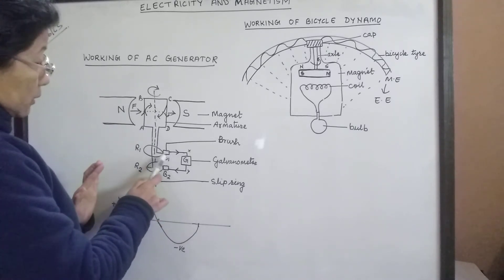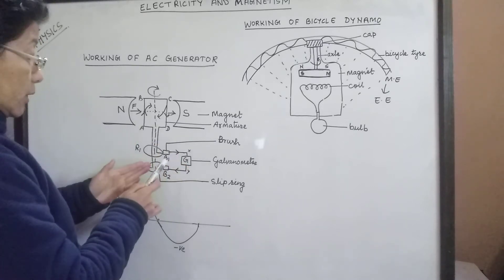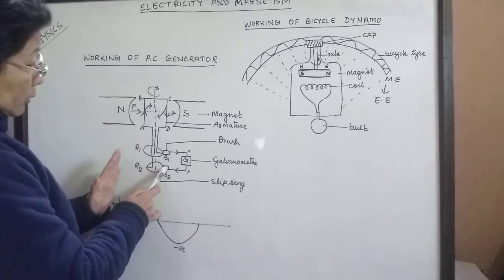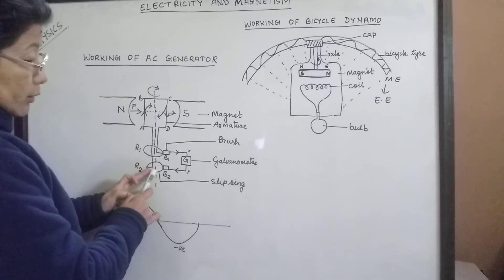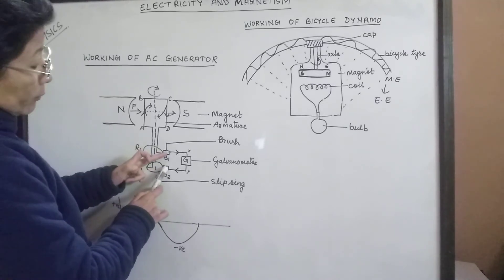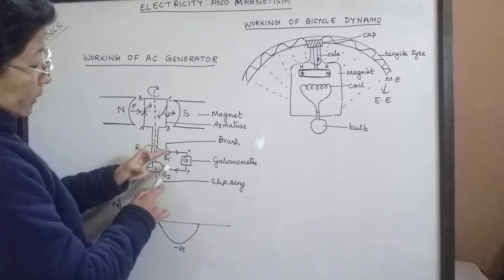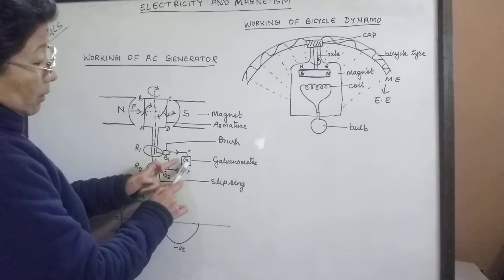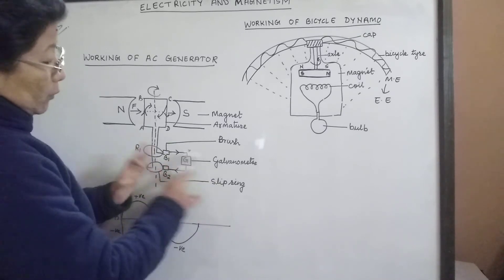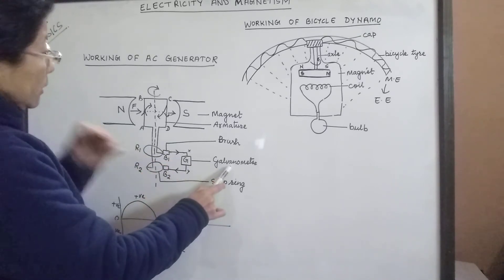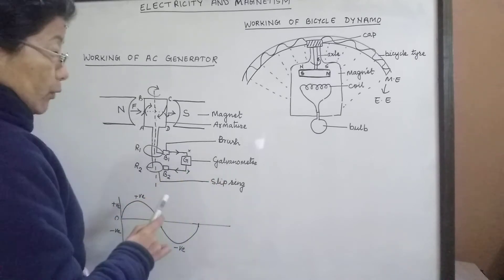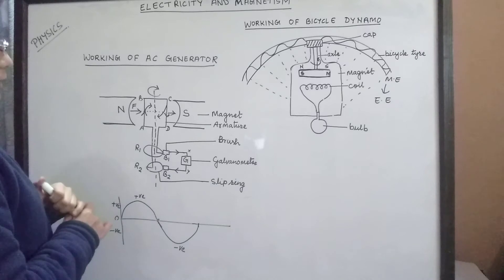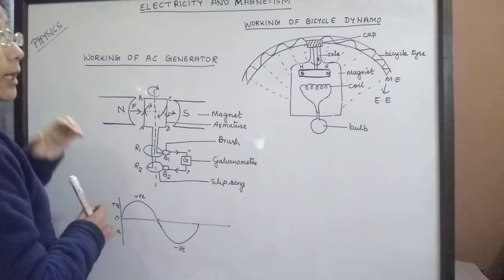There are also carbon brushes. These carbon brushes are conductors of electricity — they can conduct current. Brush 1 is for ring 1 and brush 2 is for ring 2. These carbon brushes collect the current and pass it into the circuit. The circuit is made complete by using a galvanometer to detect the current flowing in the circuit. These are the parts of the AC generator. Now we will see its working.